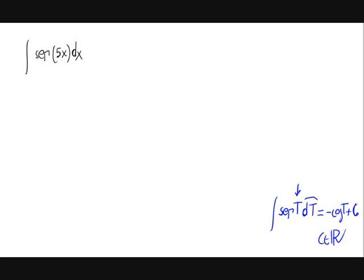We see that to use this formula we need sinus of t times its derivative. In our case we have sinus of 5x, so to use this formula we need the derivative of 5x. The derivative of 5x is 5, so we need a 5.